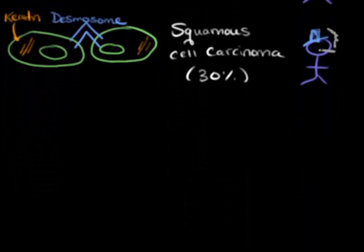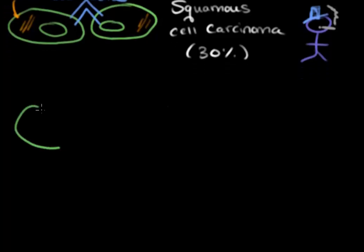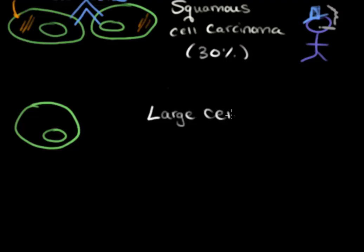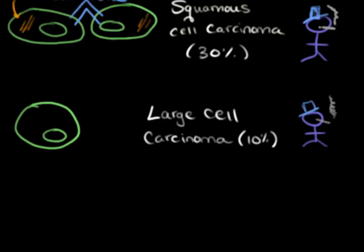Let's move this canvas up and talk about another subtype. Here's a nice, large, round cell, and actually, it doesn't have much more defining characteristics than that. So it's simply called a large cell carcinoma, and it occurs in male smokers. Large cell carcinomas occur in 10% of all non-small cell lung cancers.